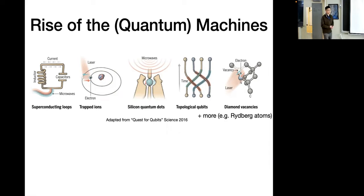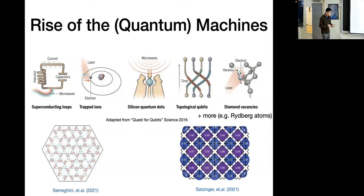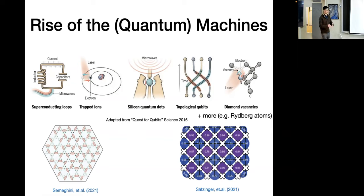Now you can literally build up a long-range entangled state as if you're carrying out some instruction set with Lego building blocks. You set up from a product state and apply gates to construct these interesting states in quantum matter. Indeed, there has been a lot of recent progress realizing this program. For example, in systems of Rydberg atom arrays and superconducting qubits, people have successfully realized what look like topologically ordered phases of matter.